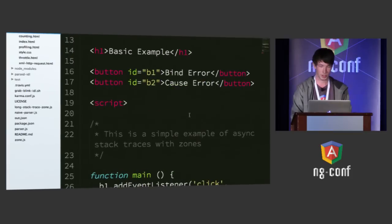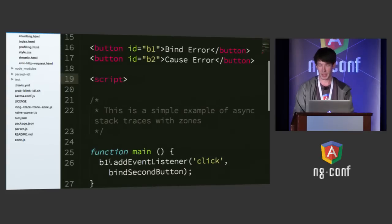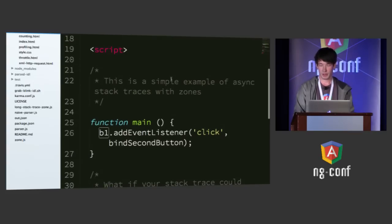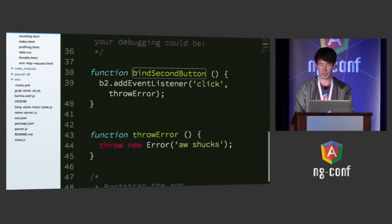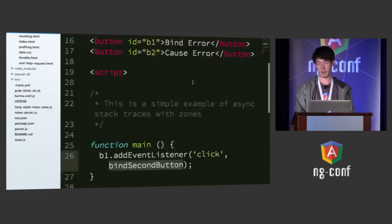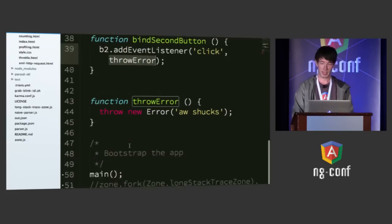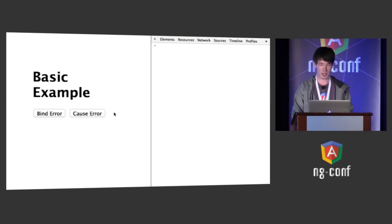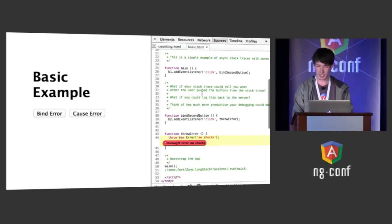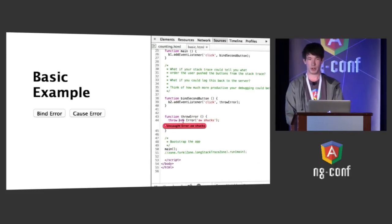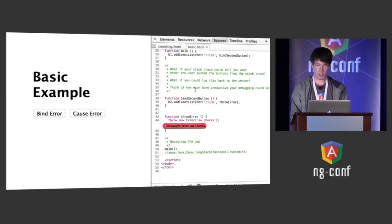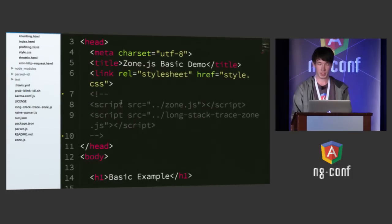Here I have a really boring application with two buttons: one that says bind error and the other that says cause error. We have a main method that sets up a listener on the first button, and what happens is it calls a function that sets up a listener on the second button, and that listener throws an error. Let's run it just to make sure we understand how this works. You get the stack trace, but the stack trace really isn't all that useful — you don't get the full story. It's really difficult to reason about.